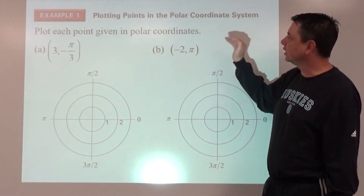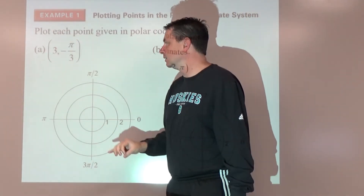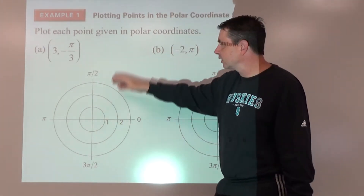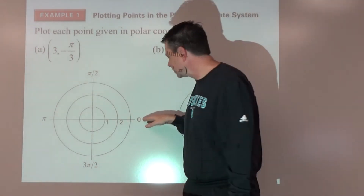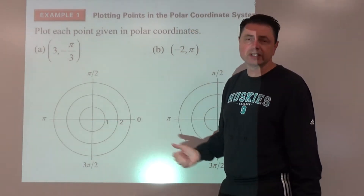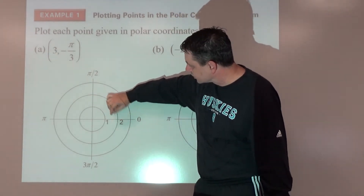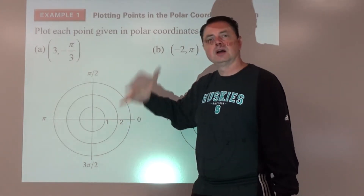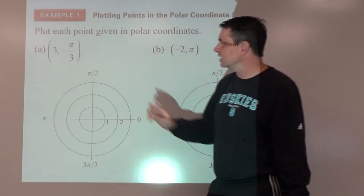Example number one: plot each point given in polar coordinates. Notice that the coordinate plane looks a little different — we show essentially the x and y axes, but we're talking about our key angles and quadrant angles from the unit circle. We also have concentric circles representing equal distances — one, two, three units away from the origin.